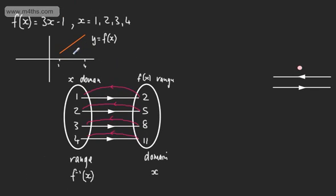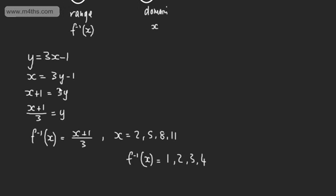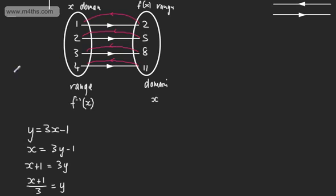Another key feature of the inverse function is, if the graphs are on the same scale, the graphs will be a reflection in the line y equals x. So we let y equal the function, swap x and y, set about making y the subject, use the notation f⁻¹(x) = (x+1)/3, and then change the domain and the range.